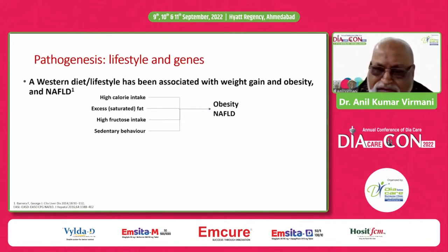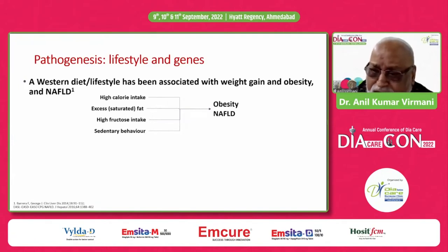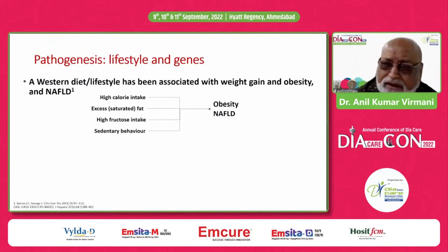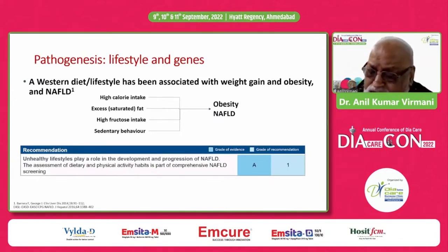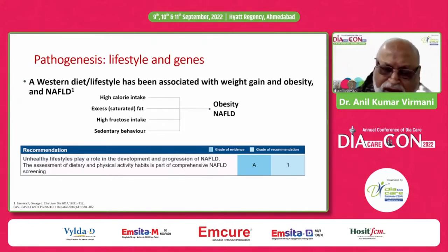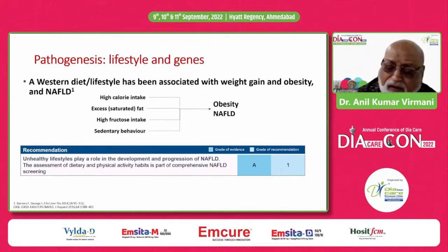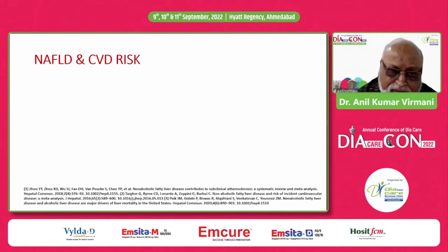The coexistence of these two conditions pejoratively affects the course and prognosis of both diseases, and type 2 diabetes is associated with a higher risk of hepatocellular carcinoma. The basic pathogenesis remains the same: lifestyle and genes. The Western diet lifestyle has been associated with weight gain, obesity, and fatty liver — high calorie intake, excessive saturated fat, high fructose intake, and sedentary behavior. The recommendations of the EASL and EASD are that unhealthy lifestyle plays a role in the development and progression of non-alcoholic fatty liver disease, and it is important to assess both dietary and physical activity habits as part of comprehensive screening.